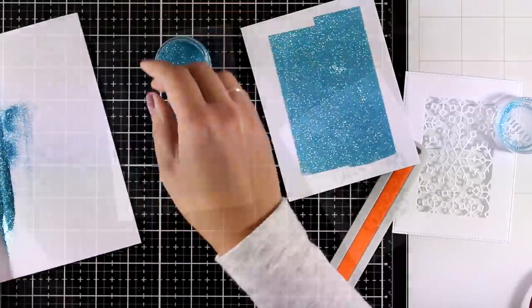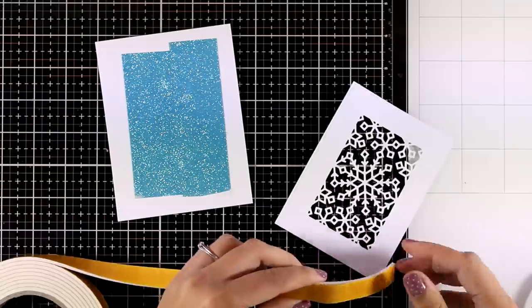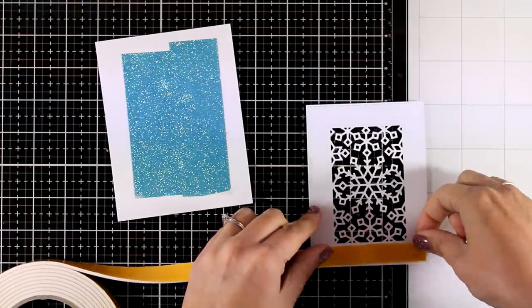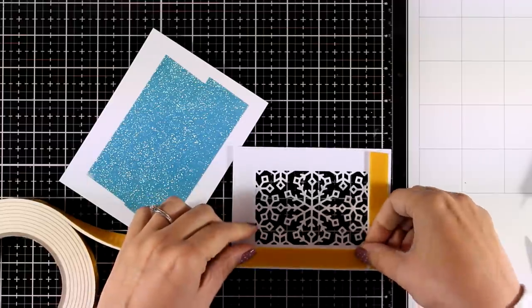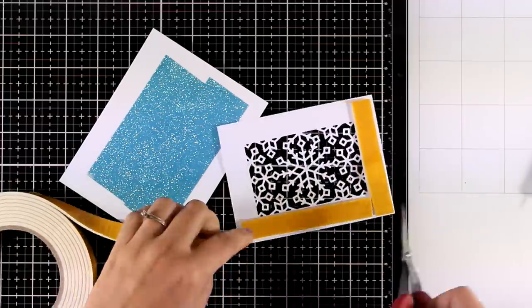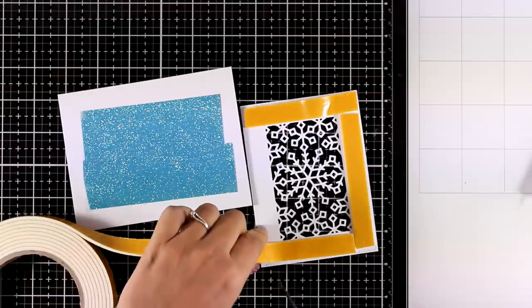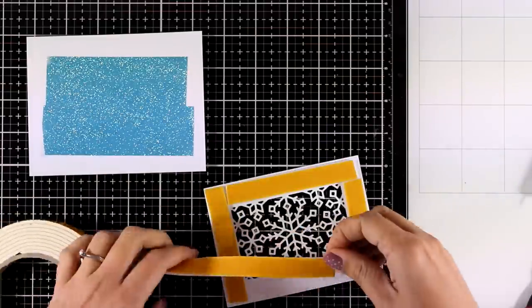One extra step that you might want to do is to run it through a die cutting machine, all that pressure is going to make sure that the glitter is going to stay put. Now all I am doing is adding some foam tape around my window panel and then I am going to stick it on top of my card base.